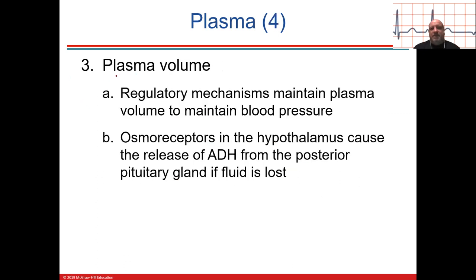Plasma volume is very important to maintain your blood pressure. Here's another thing your body is very sensitive about — maintaining homeostatic blood pressure. But the problem is that most mechanisms are about raising blood pressure, so it's very easy to have high blood pressure — hypertension — which is above approximately 140/80.